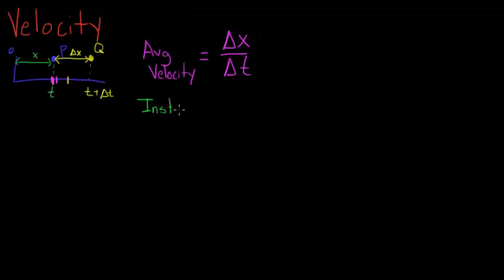So our instantaneous velocity is defined as the limit as delta t approaches zero, so it never becomes zero, it just approaches zero, of delta x over delta t. The limit as delta t approaches zero of the change of distance over the change of time. And this can also be written as the derivative of x with respect to t, dx/dt.